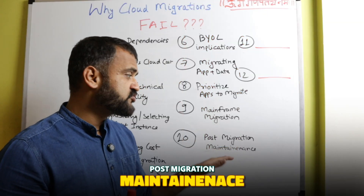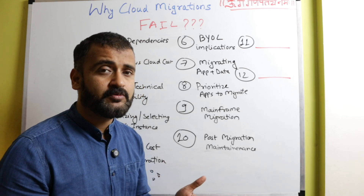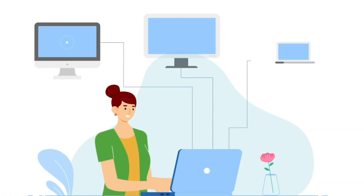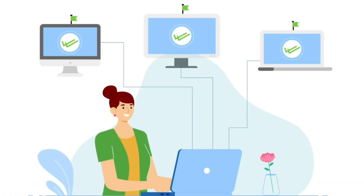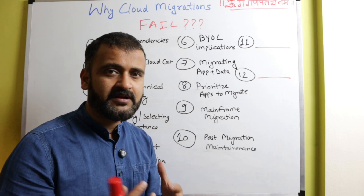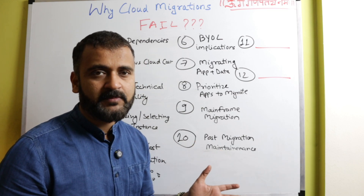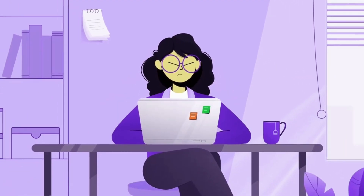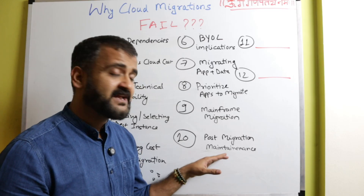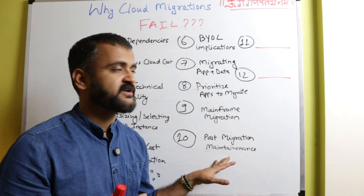The tenth reason is post-migration maintenance. As we said earlier, your journey starts when your migration ends. If you do not have cloud-native monitoring tools like Datadog or Dynatrace, which are cloud-native operations and maintenance tools, then you will not be able to do incident management or catch issues quickly. Post-migration maintenance, if not done properly, again results in the failure of cloud migration projects.